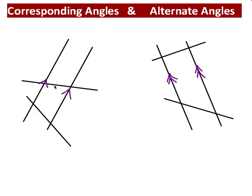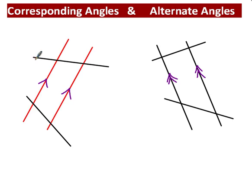It can be right at the end, it can be in the middle, it doesn't really matter. We've got a couple of parallel lines, which I've already highlighted with the arrows, but just to make it more obvious I'll highlight them in red. One word that we need to learn is what do you call a line that cuts across parallel lines? It's called a transversal. Transversal comes from Latin and it basically means to cut across, so this transversal cuts across these parallel lines.